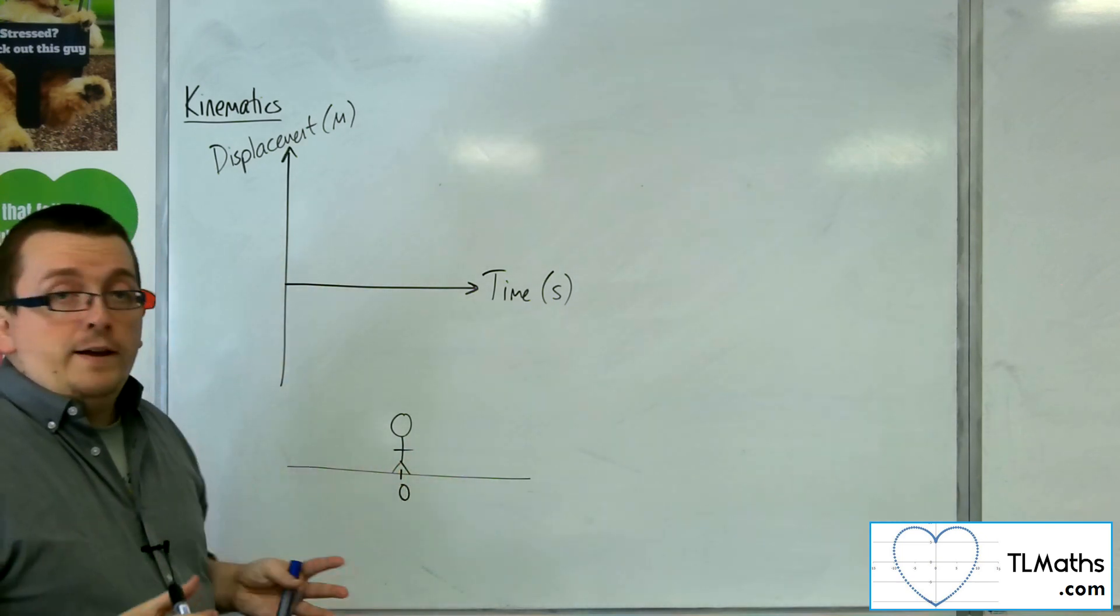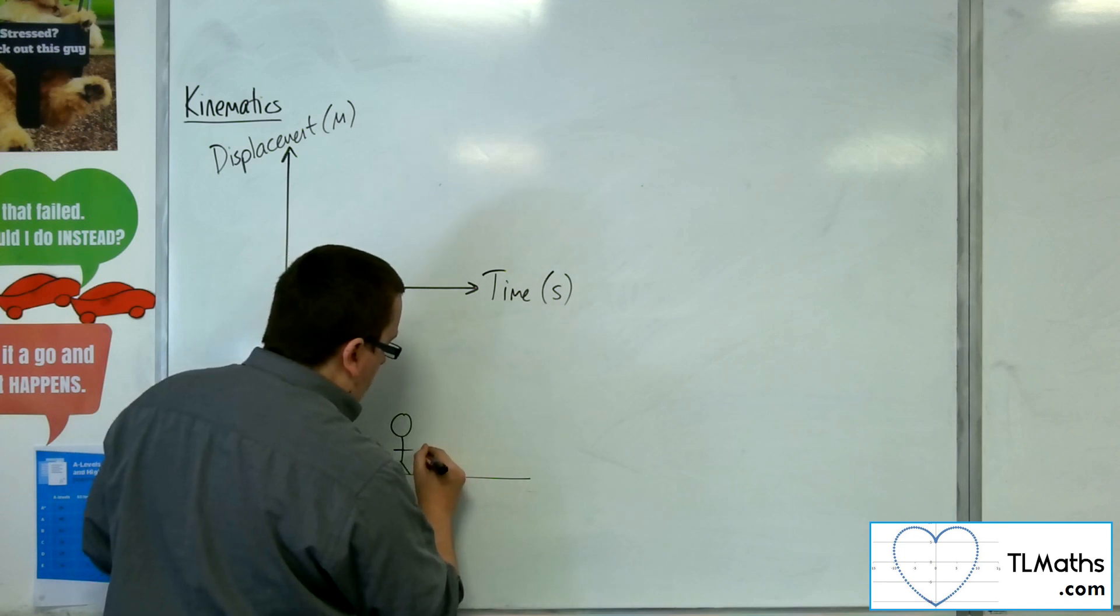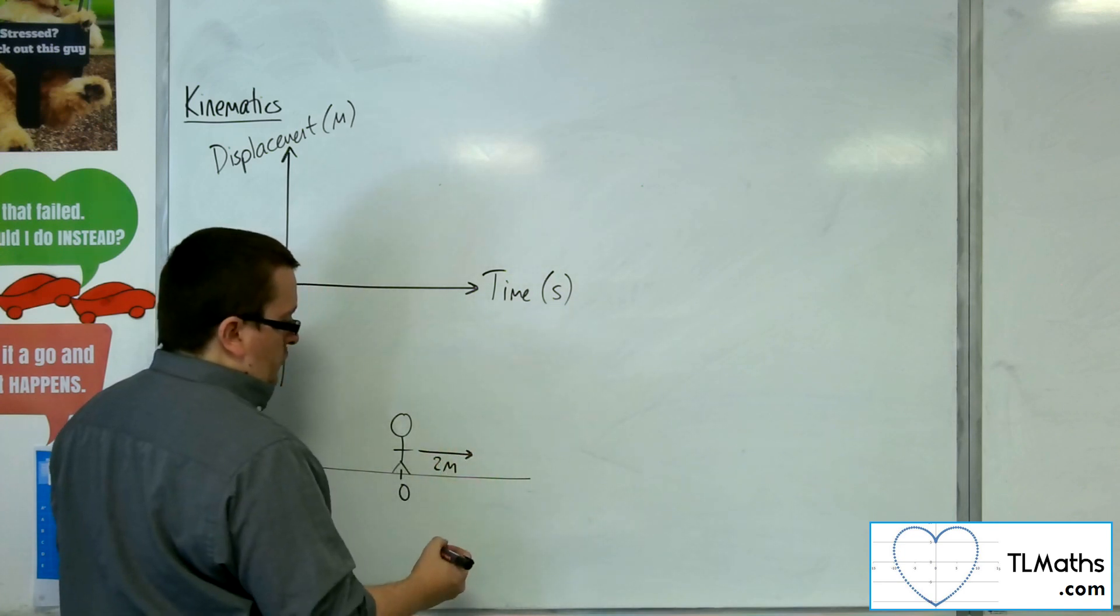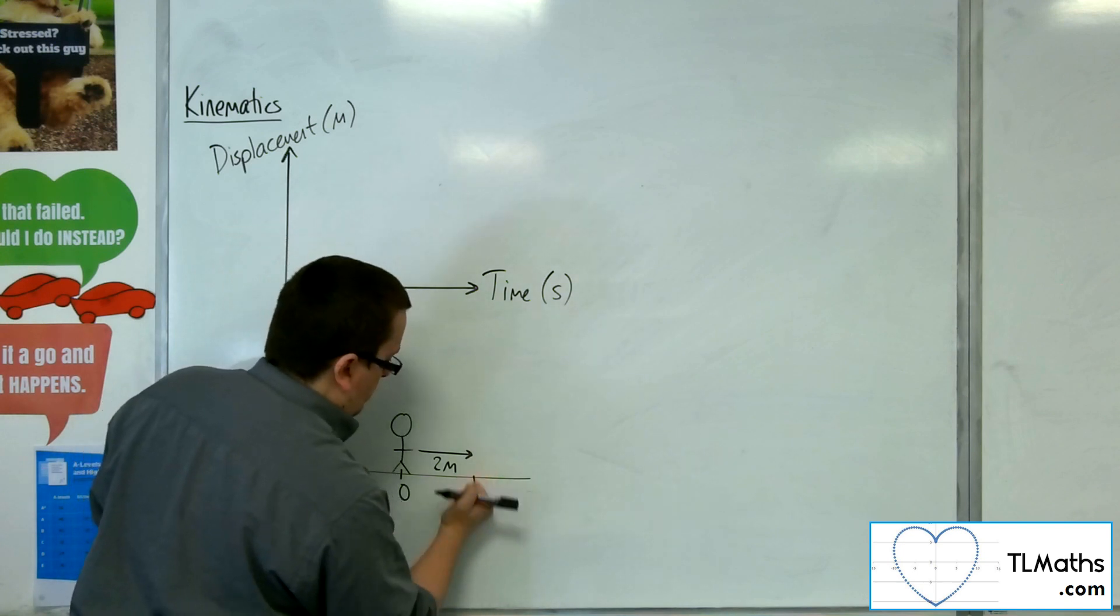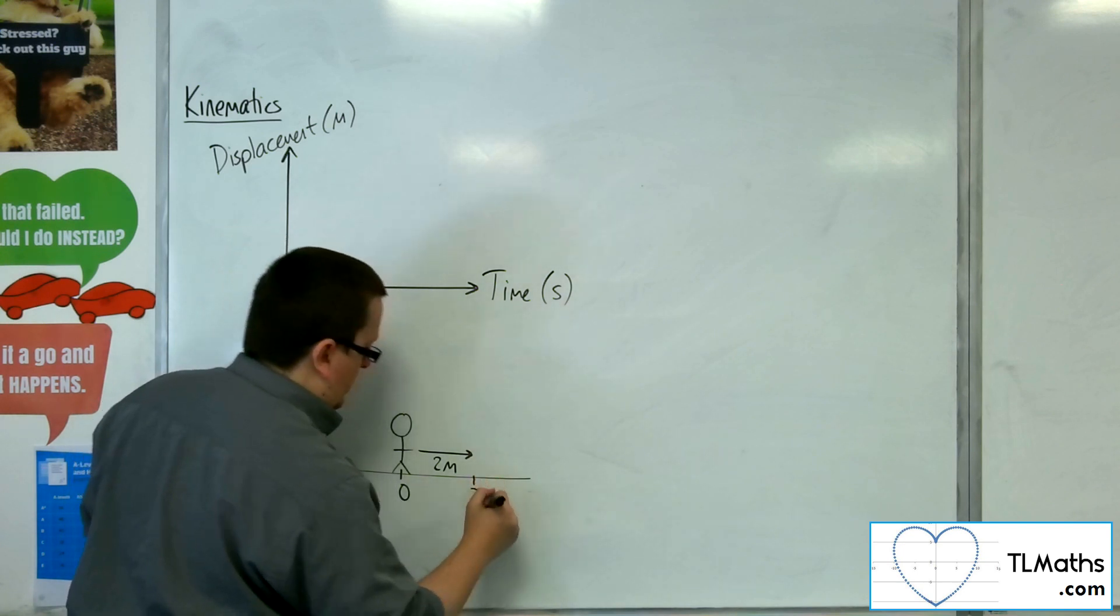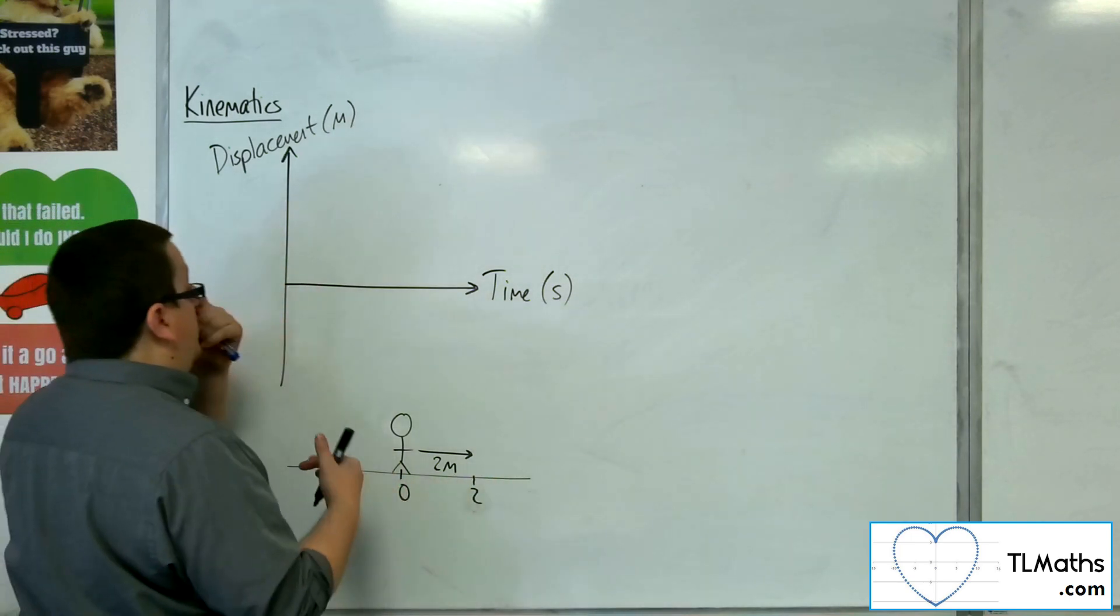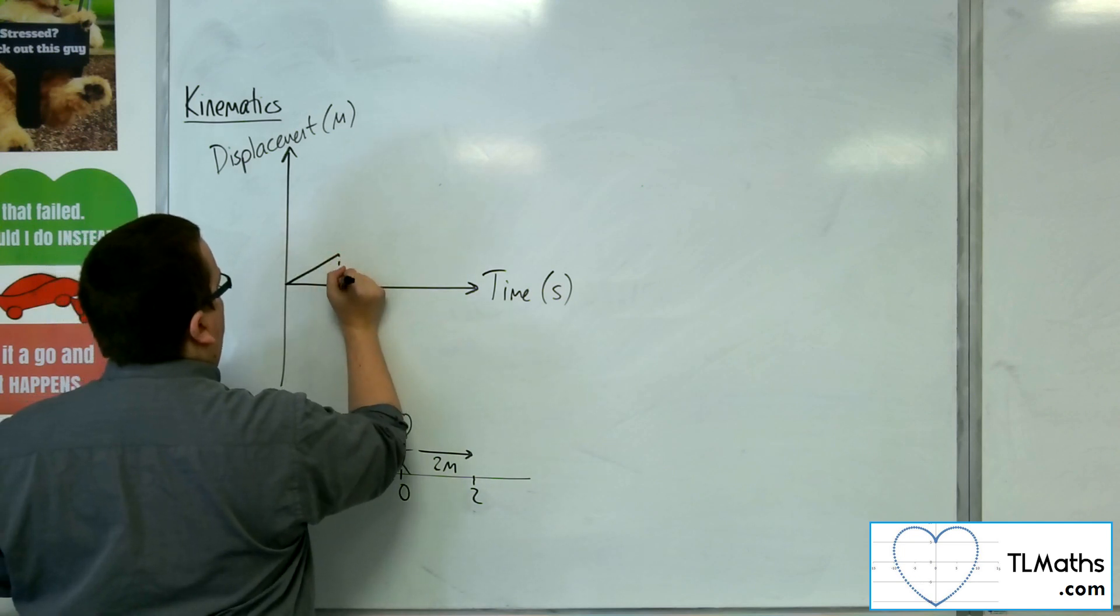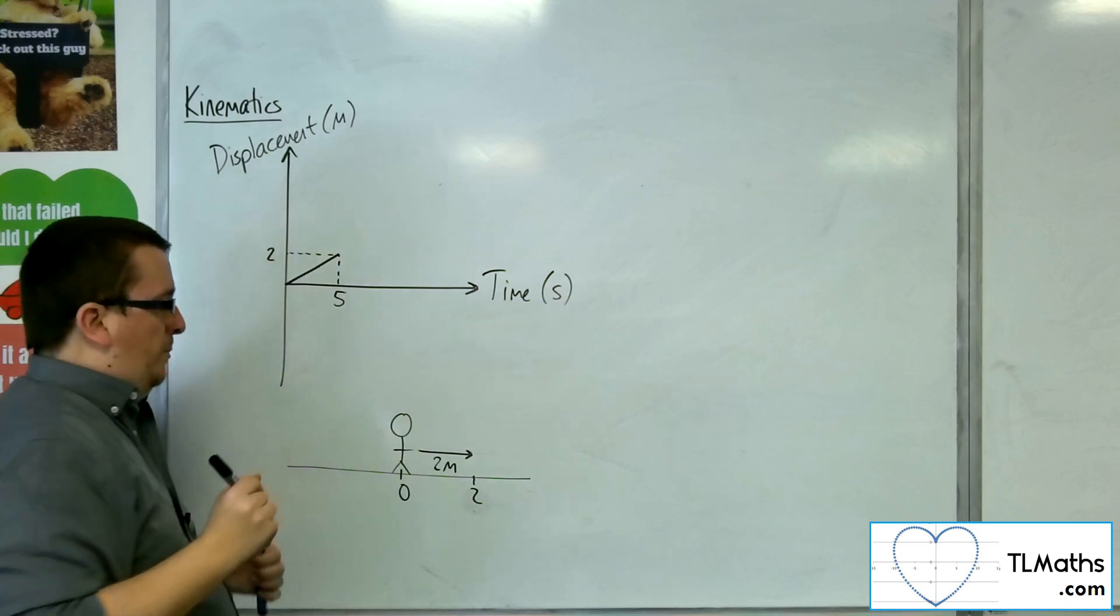So, then what they do first is they walk, let's say, two metres in this direction, and they take five seconds in order to do it. So, they take five seconds to walk those first two metres in the positive direction. So, we're going to be looking at something that looks like this. There's five seconds, and displacement, two metres.